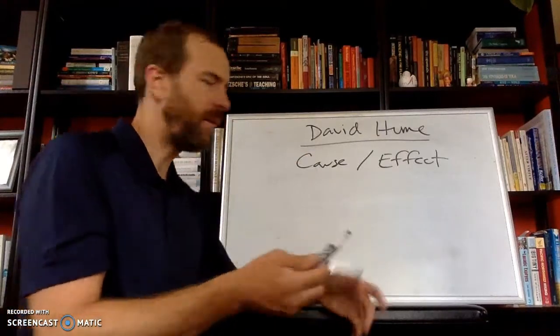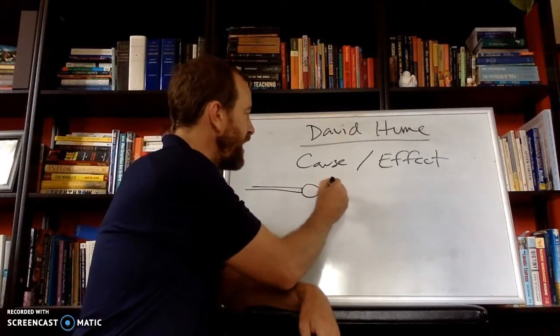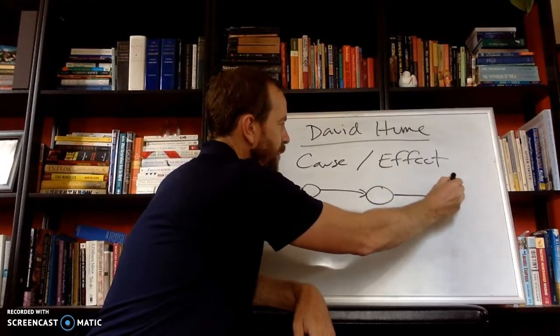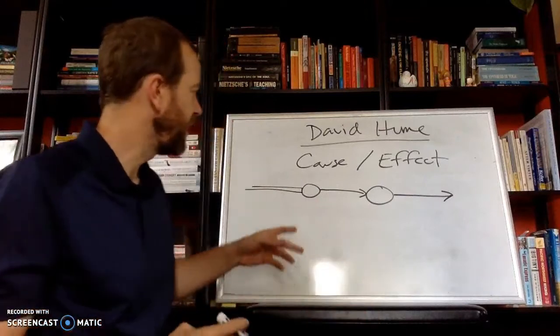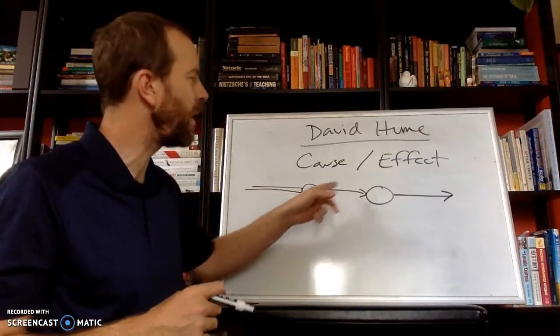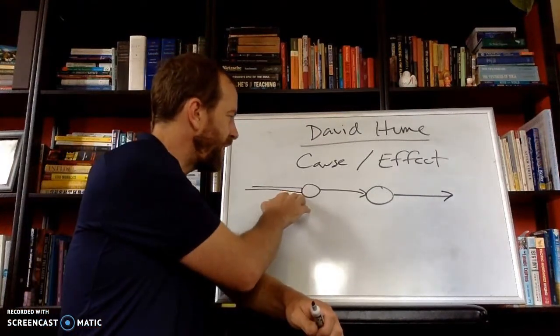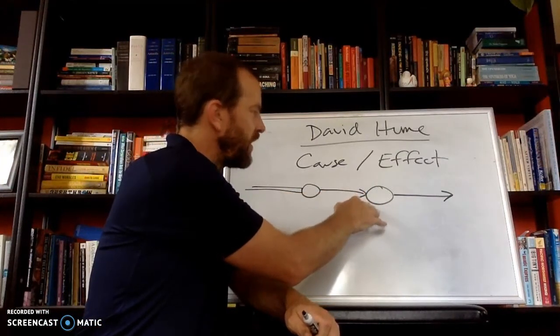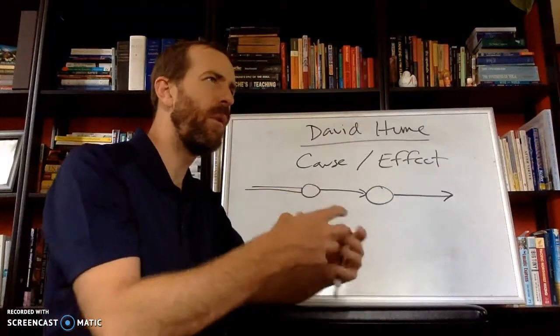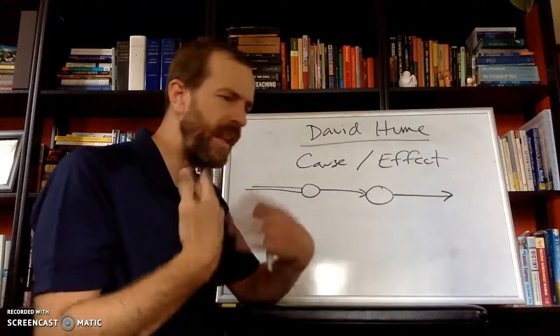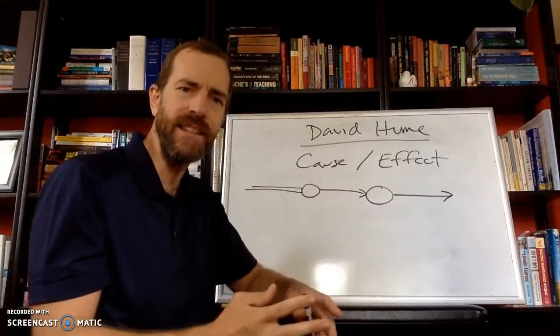So what we do when we play pool is what we see is a cue striking a ball, which then moves, which then touches another ball, which then causes that ball to move. Now, our mind understands this in terms of cause and effect. We think that the cue causes the cue ball to strike the other ball, which causes that ball to move. But what do our senses tell us? They tell us that these things touch, this thing moves, these balls touch, that ball moves. Our senses just tell us that things correlate, that one thing is happening after another.